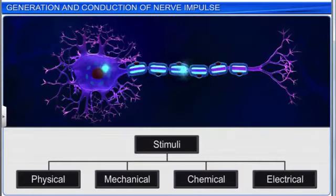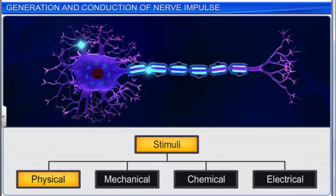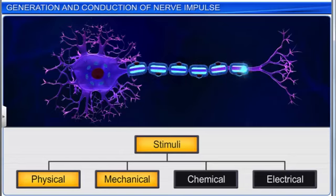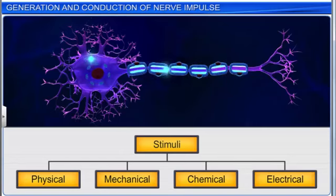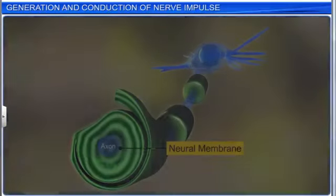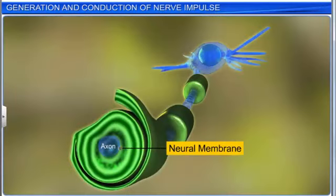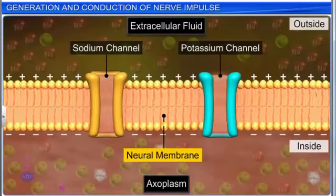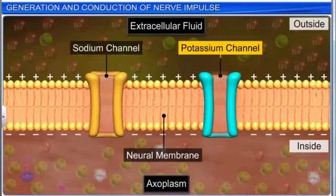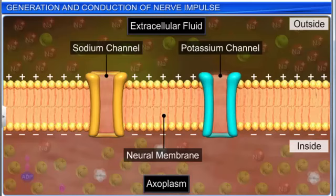Neurons are excitable cells. They may be stimulated by physical, mechanical, chemical, or electrical stimuli. The nerve fiber, or axon, is covered by a neural, axonal, or plasma membrane. The neural membrane has sodium and potassium ion channels called voltage-gated, or regulated channels. These channels open or close according to the electric potential across the membrane.